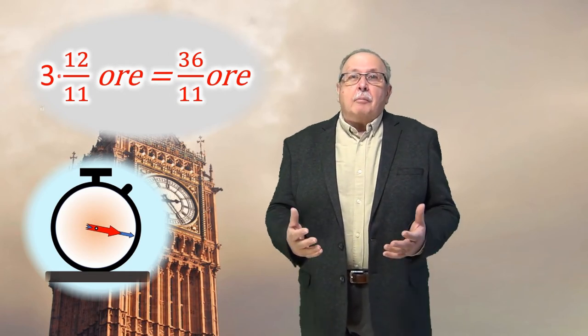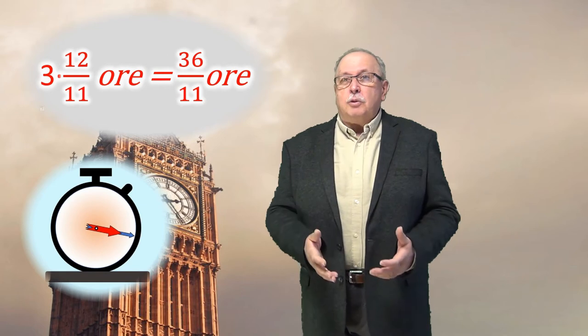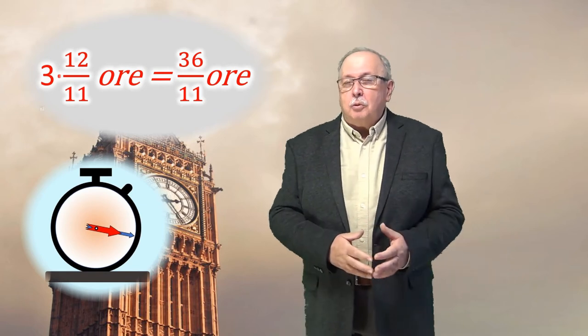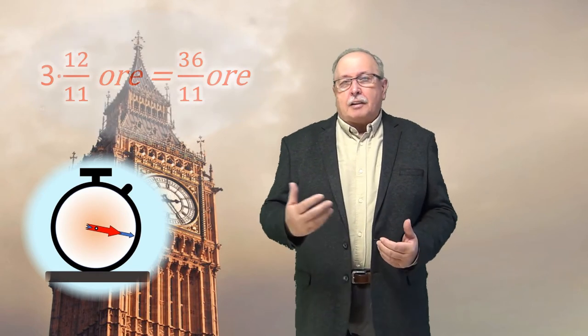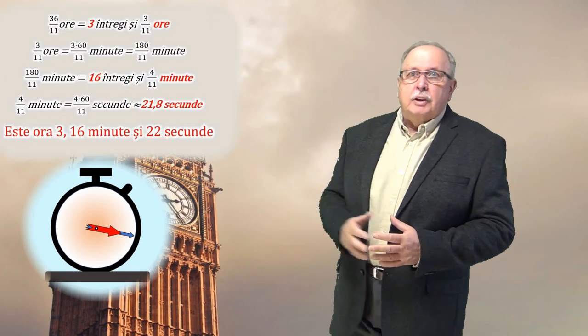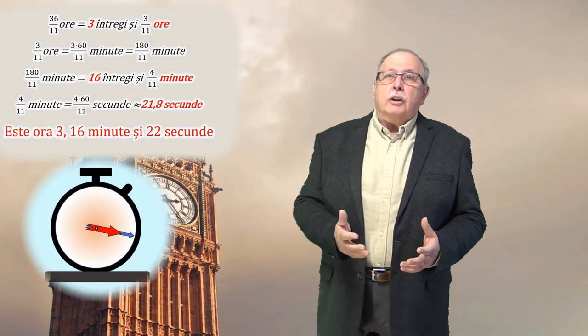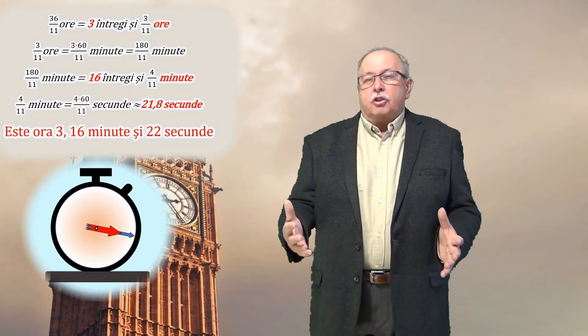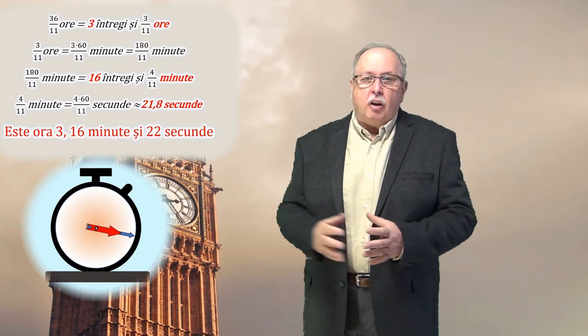Și atunci avem ora, sub formă de fracție, treizeci și șase supra unzprezece. Este ora treizeci și șase supra unzprezece. Mai trebuie doar să vedem ce înseamnă asta în ore, minute, respectiv secunde. Păi, unzprezece intră în treizeci și șase, puteți vedea calculele aici, de trei ori. Înseamnă că avem trei ore întregi. Deci este ora trei și ceva.